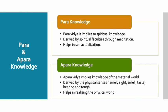Para and apara knowledge. Mundaka Upanishad ki anusar, knowledge ko do categories mein rakha gaya hai: para vidya aur apara vidya. Para knowledge is the knowledge of self — para means highest point. Apara knowledge is the knowledge of the material world. Apara knowledge, senses ke zariye, is sansaar ke baare mein jaan arjit karne ka zariya hai.